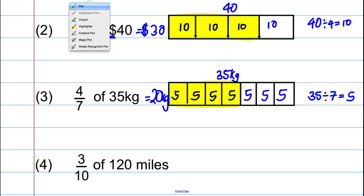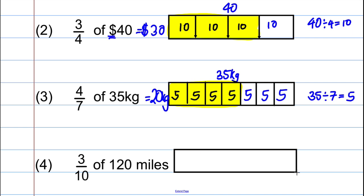So let's draw the picture for that again. So we're going to draw a box. And that box represents 120 miles. We want to separate it into tenths. Okay, so I'm going to halve it. And in each of these, I'm going to have five. So one, two, three, four, five. One, two, three, four, five.